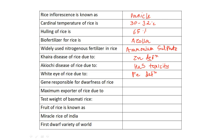The gene responsible for dwarfness of rice is Dee-geo-woo-gen (DGWG) — this is the most important gene name to remember. The maximum exporter of rice in the world is Thailand.